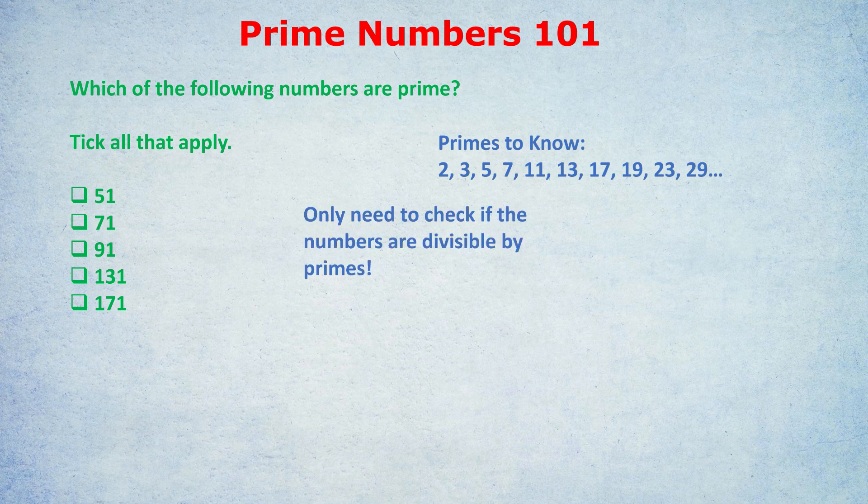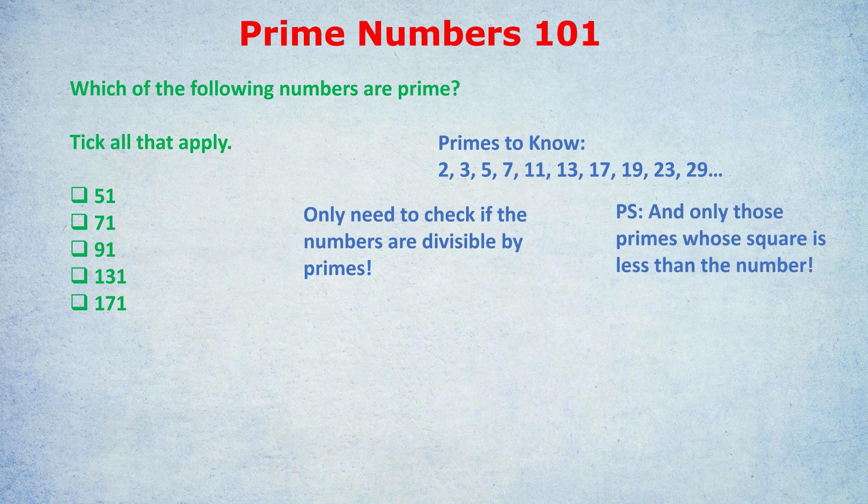Second amazing fact: you only need to check the prime numbers that are smaller than the square root of the number. Or said another way, for 51 we check 2, 3, 5, 7, but we don't check 11 because 11 squared is bigger than 51. You check the prime numbers using a calculator or long division, but you stop the moment you reach a prime whose square is bigger than the number.